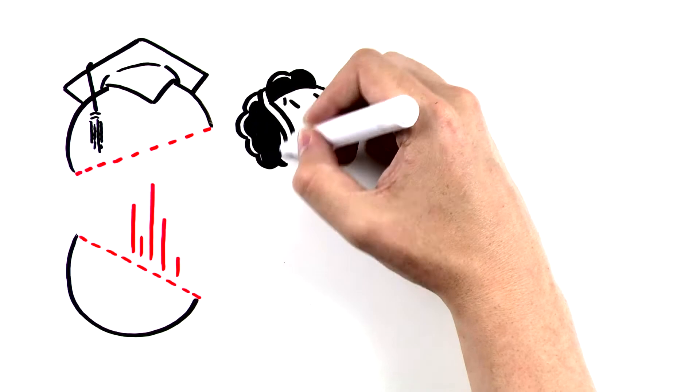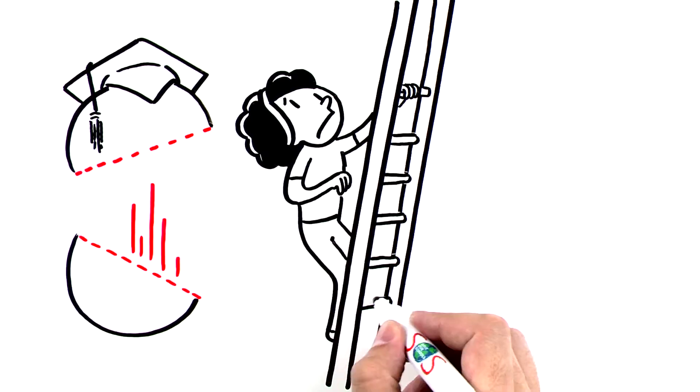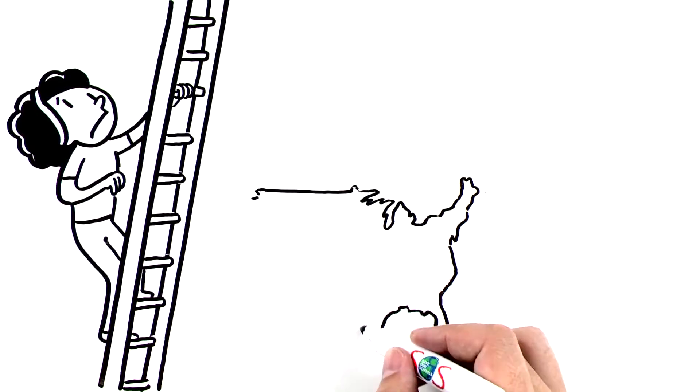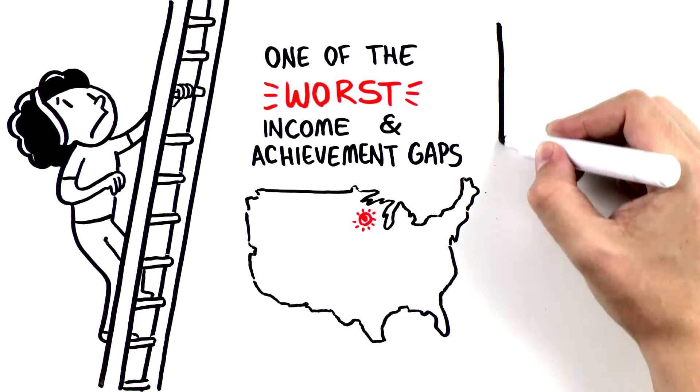A low-income 8th grader is three grade levels behind their peers in math and two grade levels behind their peers in reading. These alarming facts correlate with one of the worst income and achievement gaps in the nation.